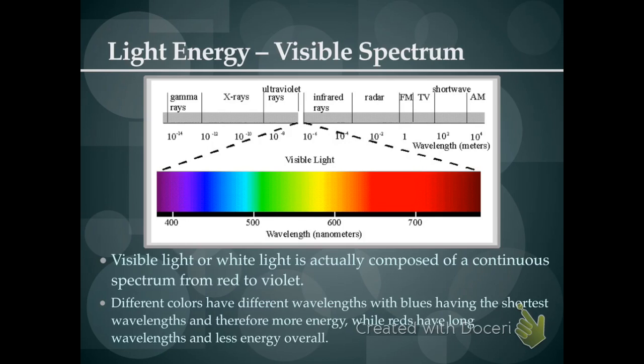We are specifically concerned with visible light. Visible light is a small section of the electromagnetic spectrum, but it is comprised of all of the different colors of light possible. So the different colors are viewed that way because they have different wavelengths and different amounts of energy. Purple or blue light have the shortest wavelength and therefore the most energy, while reds have a longer wavelength and less energy overall. This is the visible light spectrum that we are going to be working with when it comes to photosynthesis.